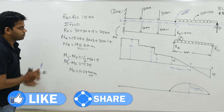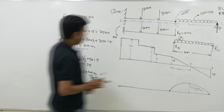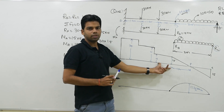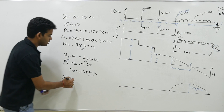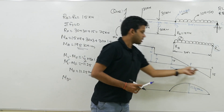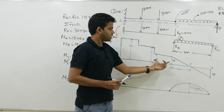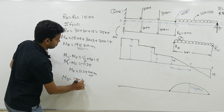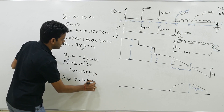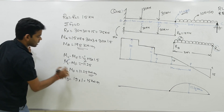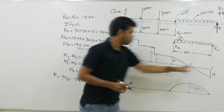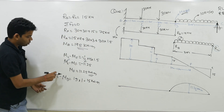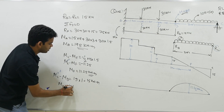For point D, the area under the SFD from C to D: the triangular area from C to F is −11.25, then from F to D is +11.25, so the net area is zero. The remaining rectangular area from F to D is 15 × 1 = 15 kN·m. So MC − MD = 15, giving MD = −15 kN·m.